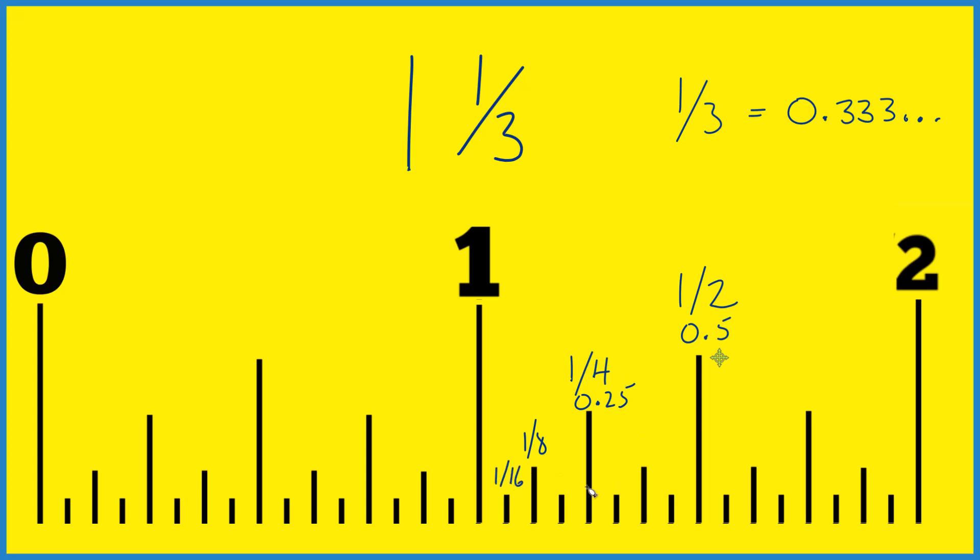So we could say that right here, halfway between a fourth and a half, we could go this here's one-eighth, two-eighths, three-eighths. So that's three-eighths right there. Three-eighths, that turns out to be, write it up here, 0.375. So now we're looking for 0.333.